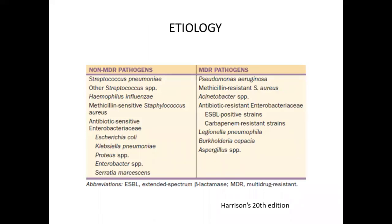Moving on to the etiology of ventilator-associated pneumonia, it could be a multidrug-resistant pathogen or a non-multidrug-resistant pathogen, which may include Streptococcus pneumoniae, other Streptococcus species, Haemophilus influenzae, or methicillin-sensitive Staphylococcus aureus. Or it could be a multidrug-resistant pathogen like Pseudomonas aeruginosa, or methicillin-resistant Staphylococcus aureus, or Acinetobacter, or it could be Burkholderia or Aspergillosis.